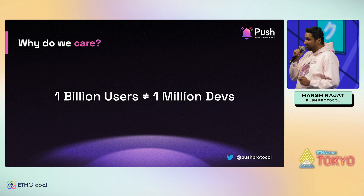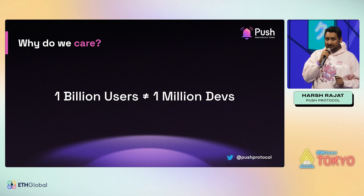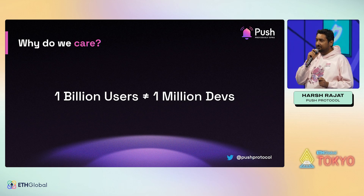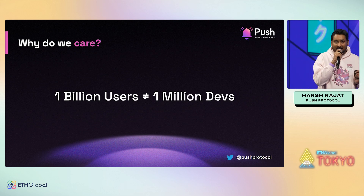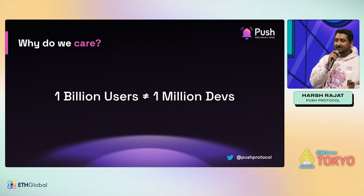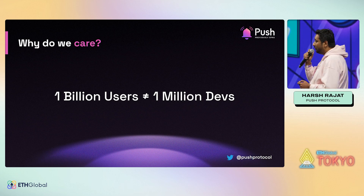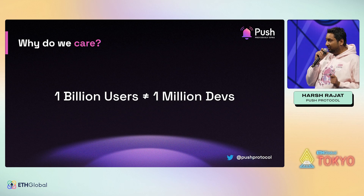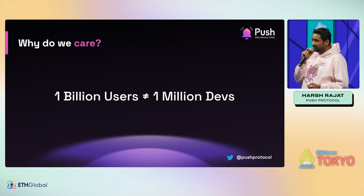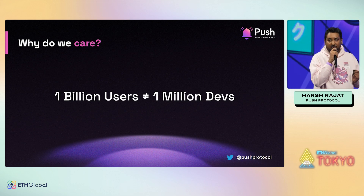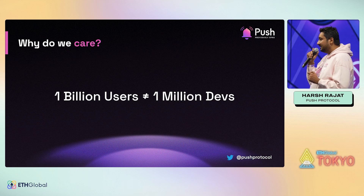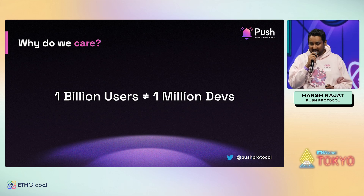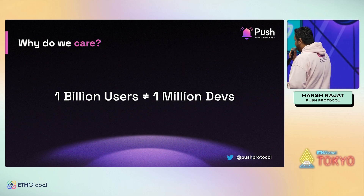A lot of efforts are going on in Web3 UX to solve these problems. For example, account abstraction eliminates the steep learning curve required by new Web3 users. Meta transactions ensure the tech is abstracted away so users are only focused on features — Lens is a great example of that. Even UI is improving; many apps now don't require a wallet to be connected just to show the interface. You only sign or execute a transaction by connecting the wallet, and Uniswap is a great example of that.